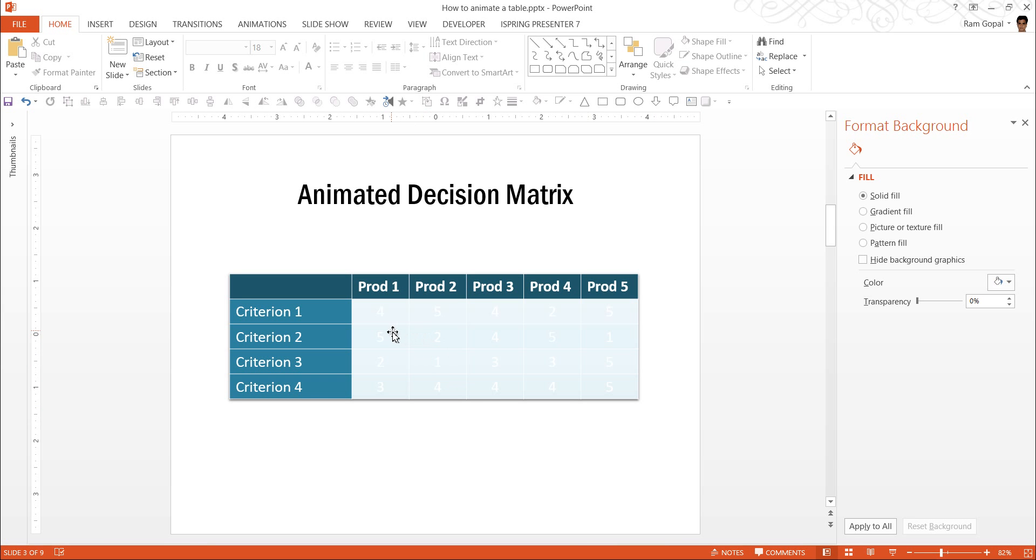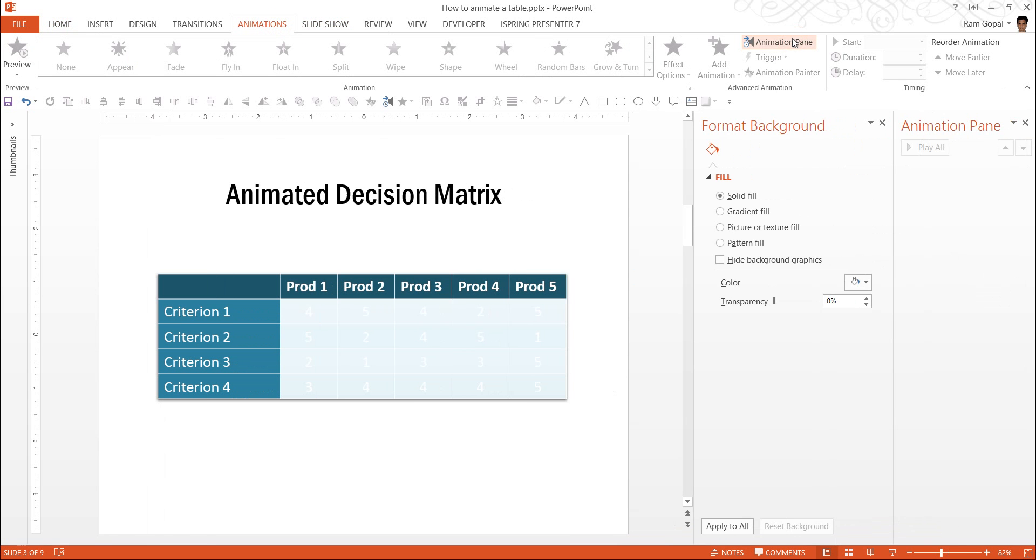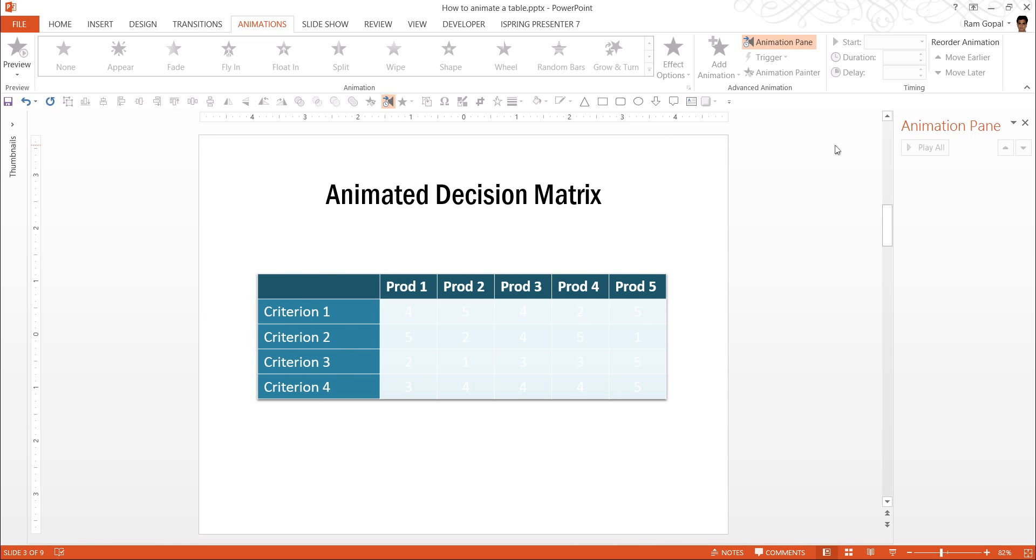Now the next step is to add exit animation to each of these. And it's very simple. Let us go to animations, go to animation pane. And as you can see here, there are too many panes here. So I am going to close the one that is for format background.